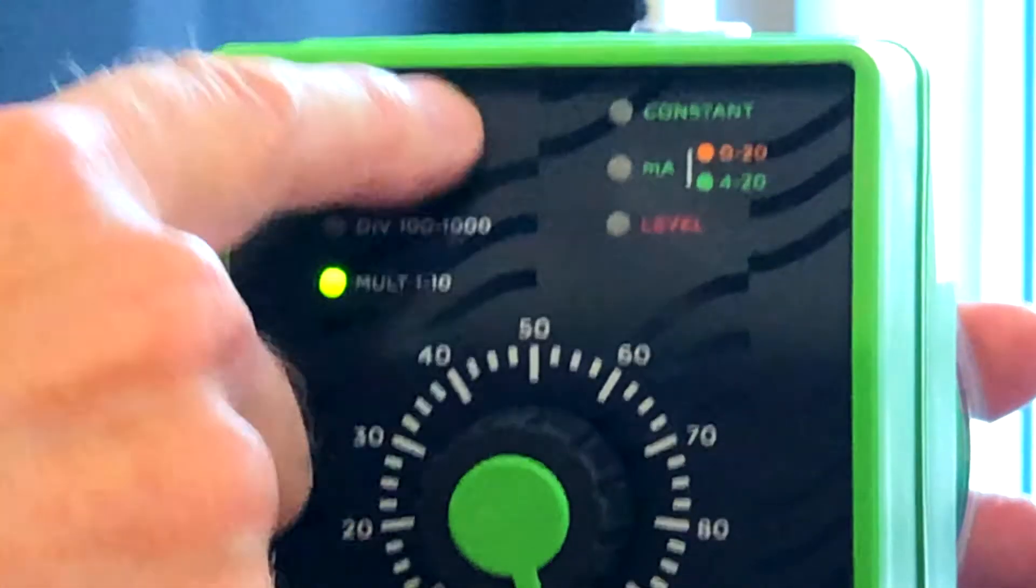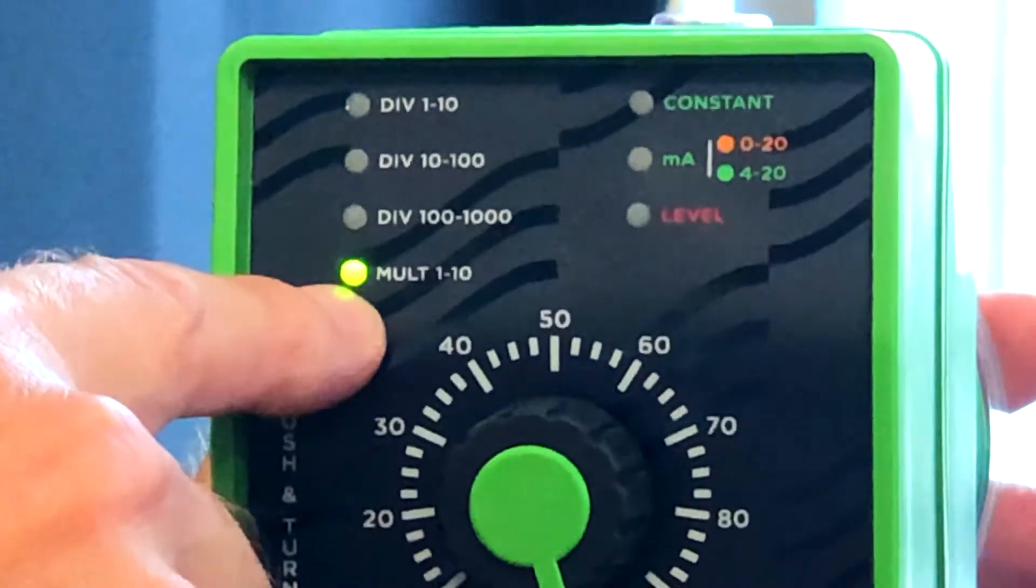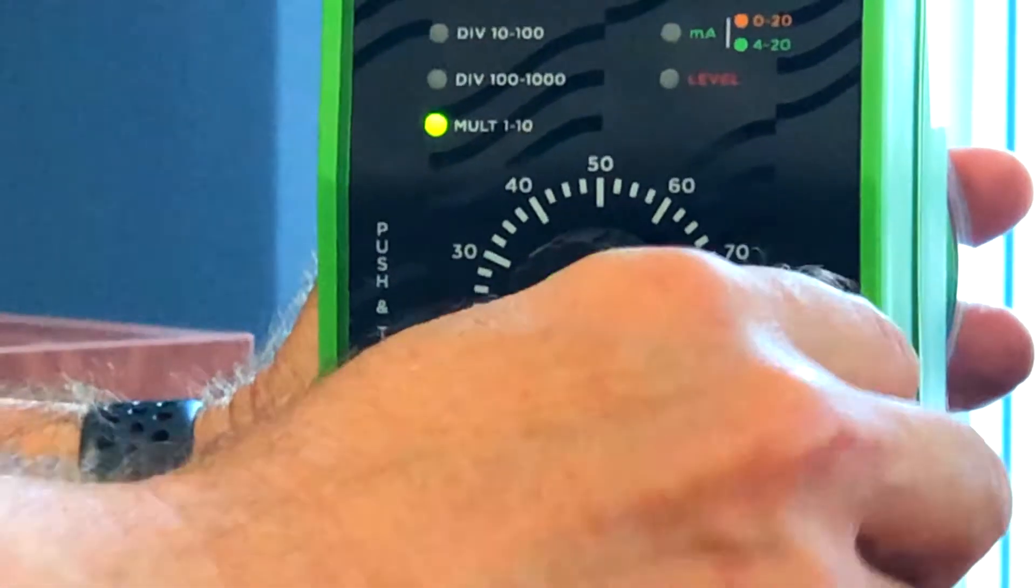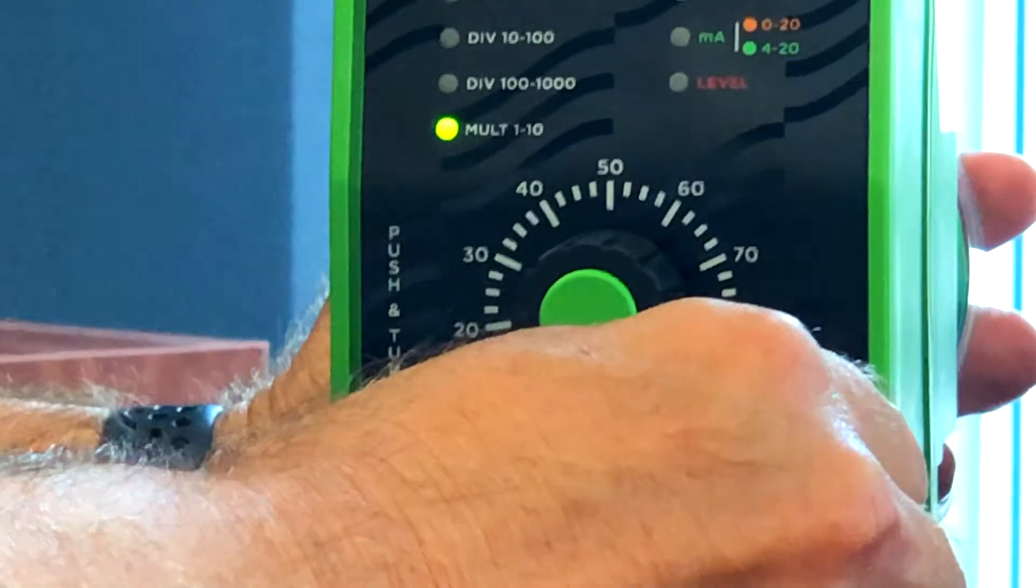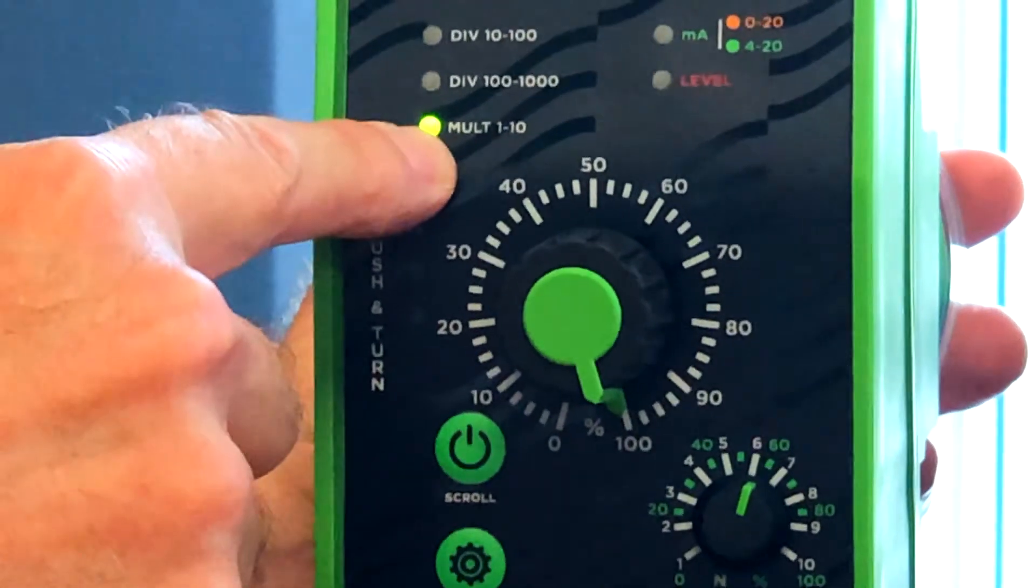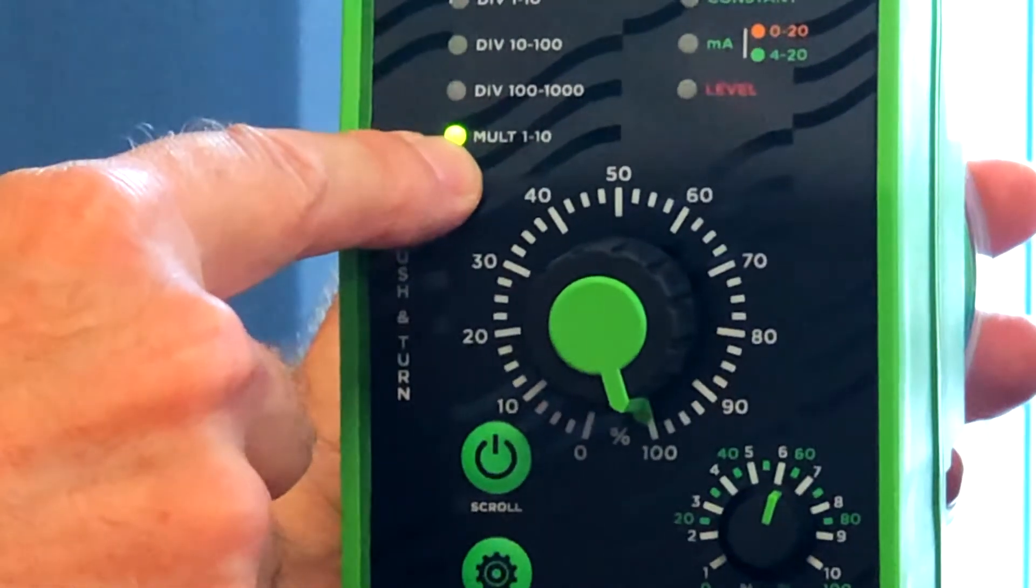So when you're actually in one of the white modes, such as the one we're in now, which is multiply 1 to 10, the actual dial serves as a factor rather than a percentage. So if I turn the dial to position 6 in white, it means that it's multiplying by 6, which means that one pulse in will give you 6 strokes out.